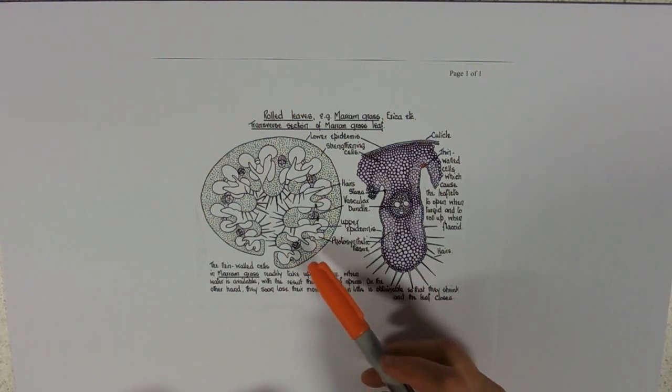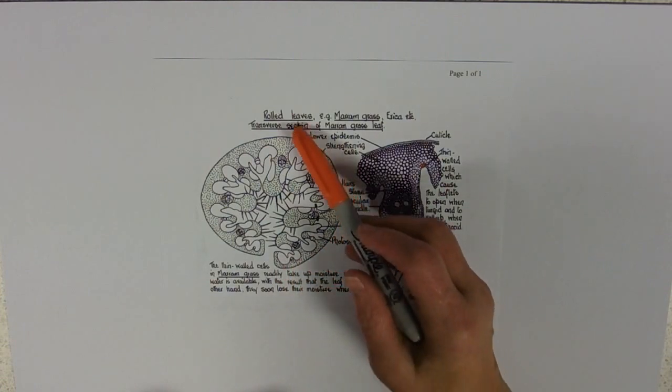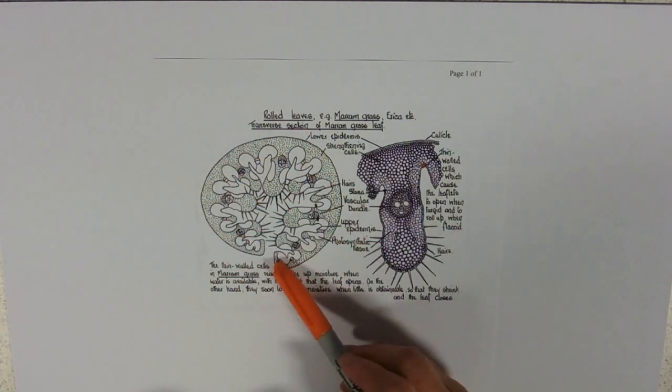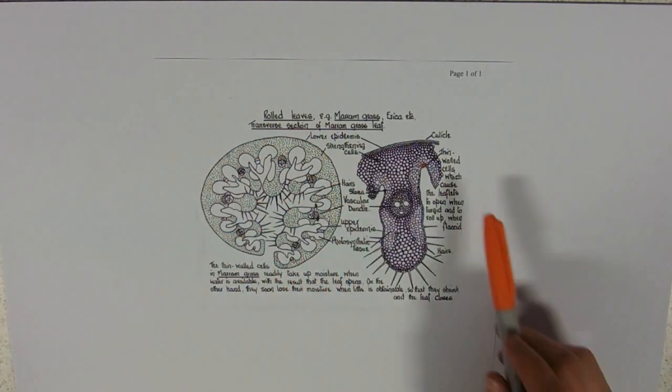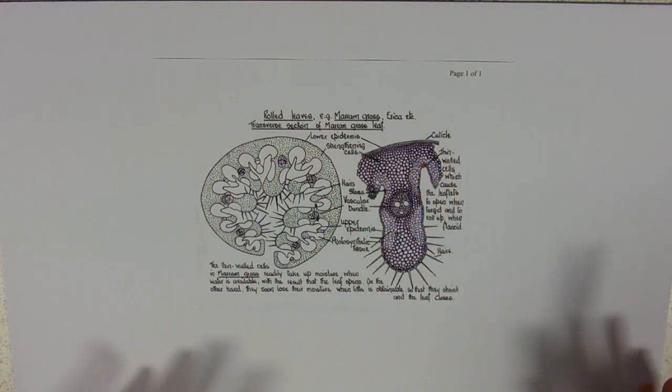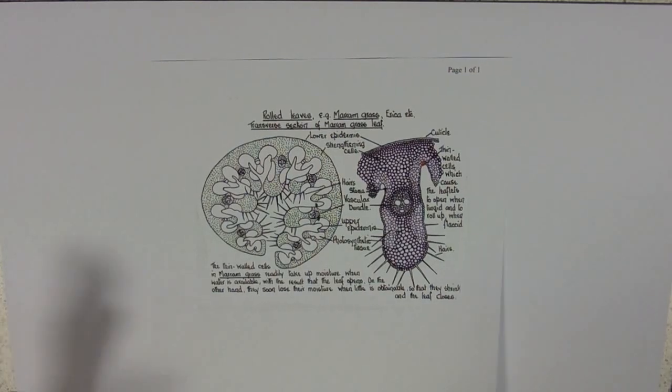So then there's no stomata on that side at all. It's got really thick waxy cuticle. And the other problem of course that all of these lovely dry and arid plants have is that their cells will tend to go a little bit flaccid, and so they often have lots and lots of strengthening tissue just to ensure that they can stay upright and get as much sunlight as possible.